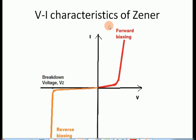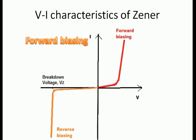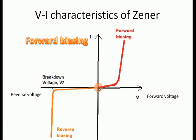Now let's discuss the main topic: the VI characteristics of the Zener diode. VI characteristics are divided into two parts — forward characteristics and reverse characteristics. The forward characteristics are represented in the first quadrant. When we apply forward voltage to the diode, initially the current will not flow, but at a point when the depletion region breaks down, current will begin to flow. This is the forward characteristics.